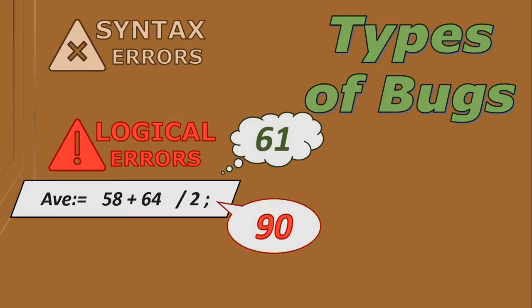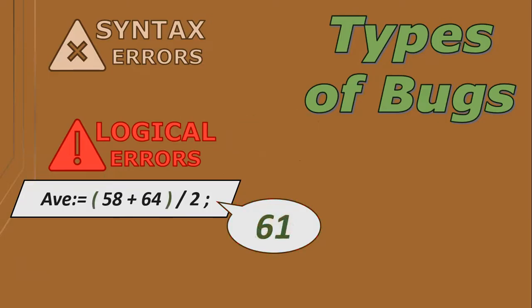The calculation does the division of number two by two first, then adds the result to number one, which is logically incorrect. Brackets are needed to fix this error. I always say: computers don't do what you want them to do — they do what you tell them to do.